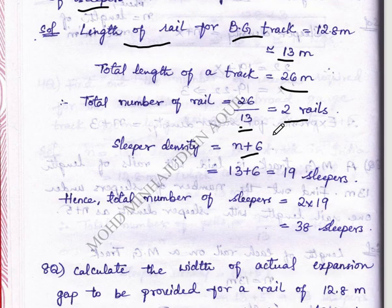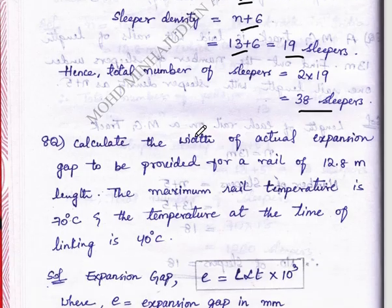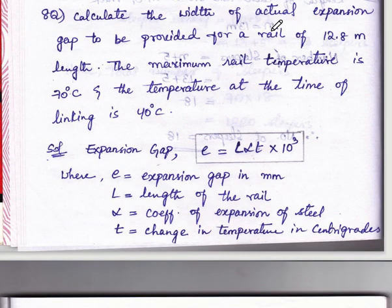Sleeper density is n plus 6 as given in the question. Substituting n equals 13, we get 19 sleepers per rail. Therefore total number of sleepers equals 2 into 19, which gives 38 sleepers.